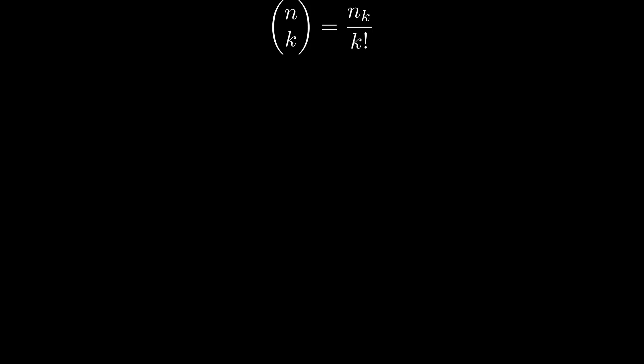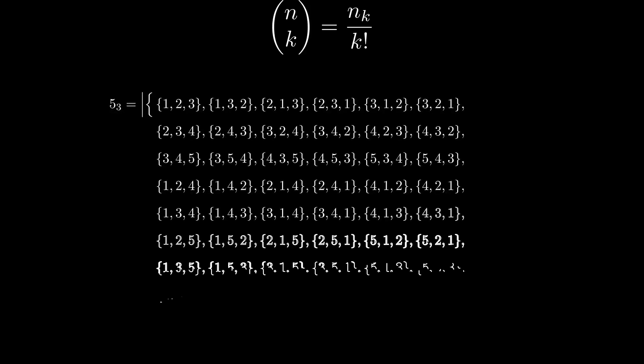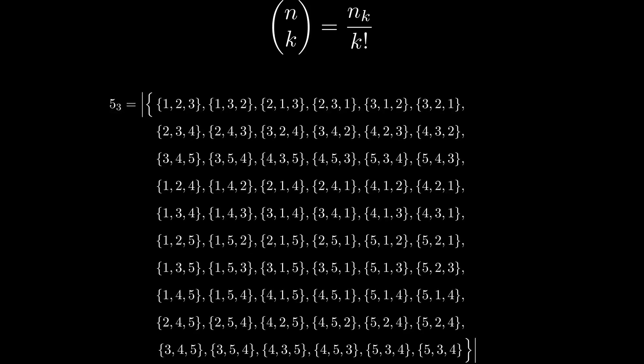This is best understood combinatorially. The numerator, n to the falling k, counts the number of permutations of k objects you can make, given a choice of n objects: n choices for the first, n minus one for the second, and so on.